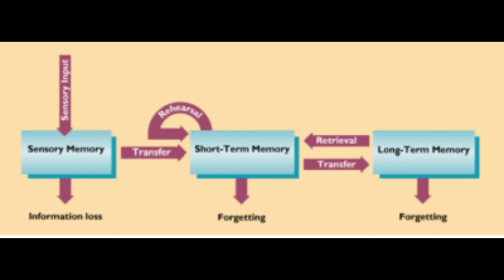There are three memory components of the Atkinson and Shiffrin model of human memory: First, sensory memory. Second, short-term memory. Third, long-term memory.